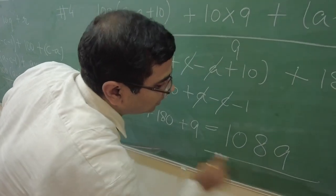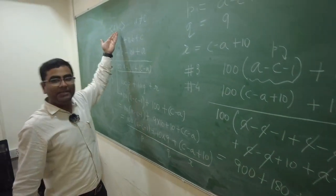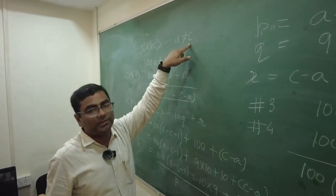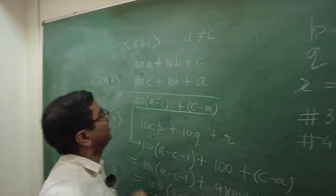So, my dear friends, as you see, we are getting a constant number 1089. So, what does it show? You take any ABC such that A is not equal to C and you do this entire process. Let me recap it quick fast.